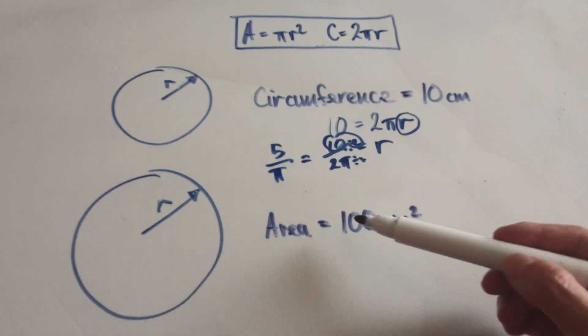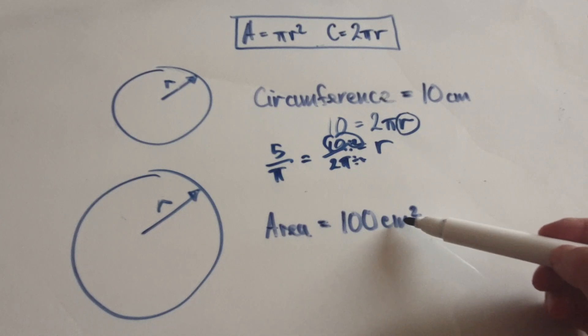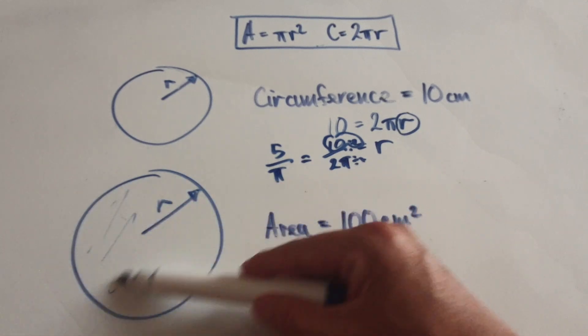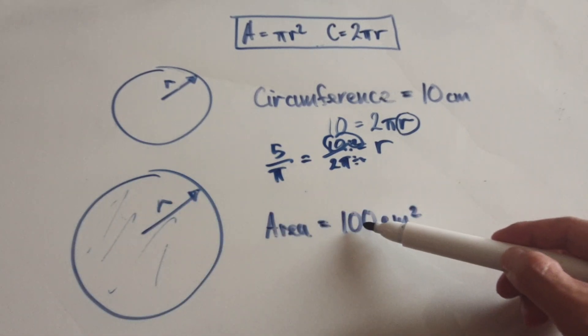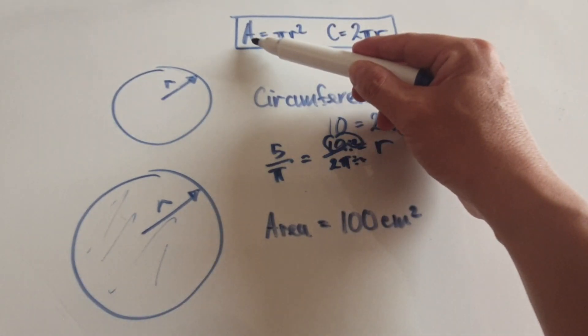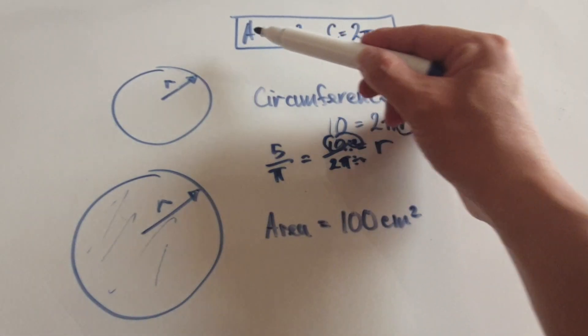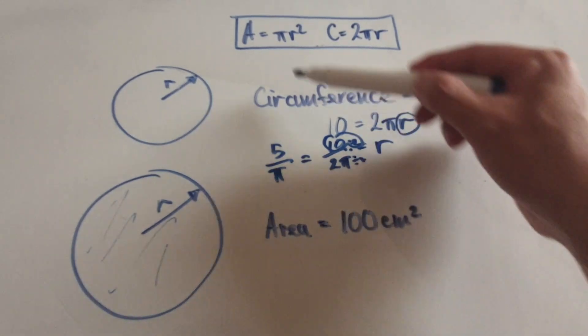For this one here, you're told that the area is 100 centimeters squared, so this whole area is 100. Put the 100 into the area formula, not the circumference formula.